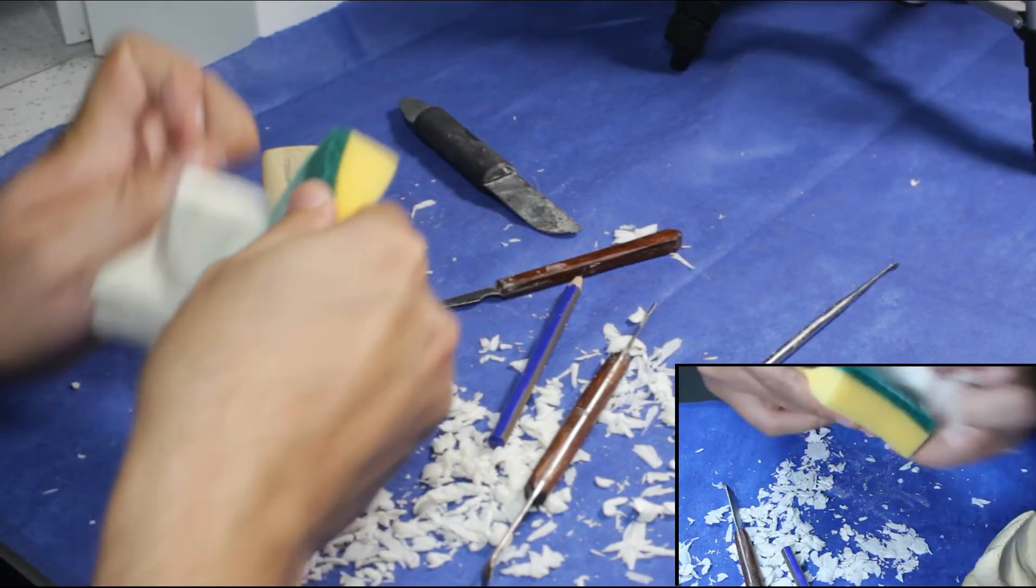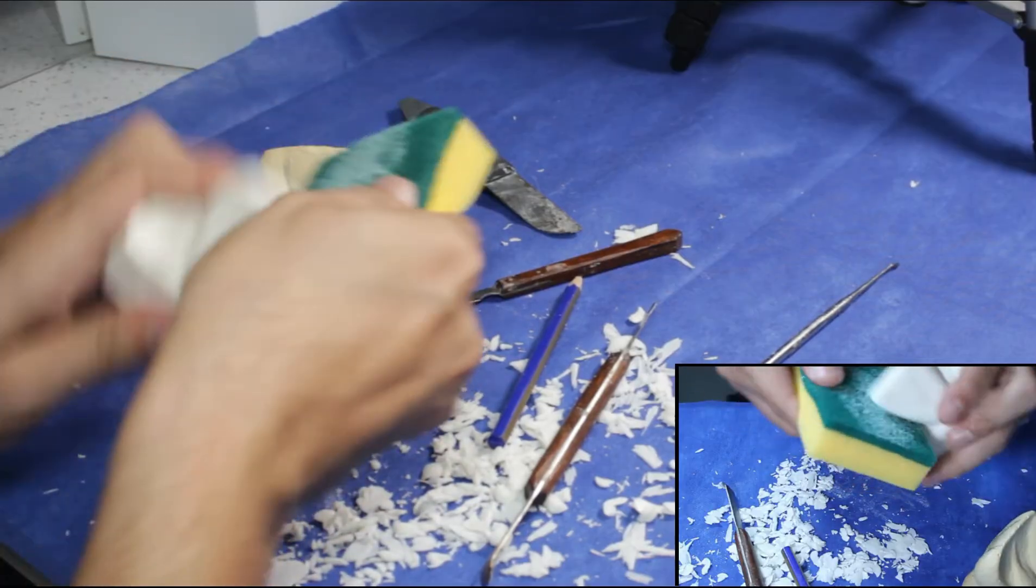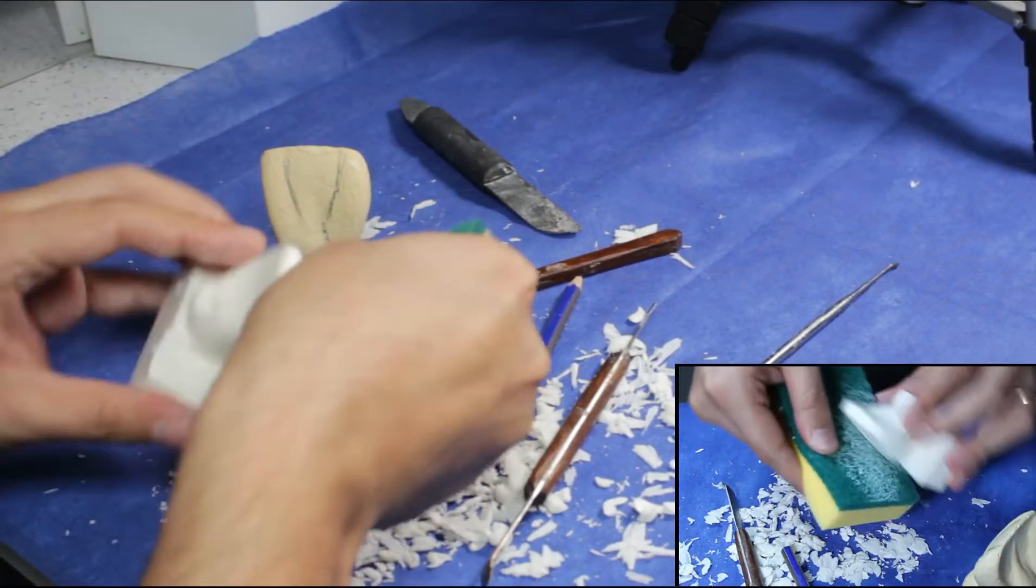To see better and get rid of the knife marks, we use the sponge. We check the tooth from each dimension.